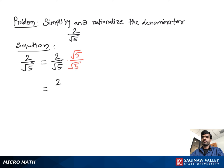Then we get 2 times square root 5 over square root 5 times square root 5, which is square root 5 squared. Our final answer is 2 times square root 5 over 5.